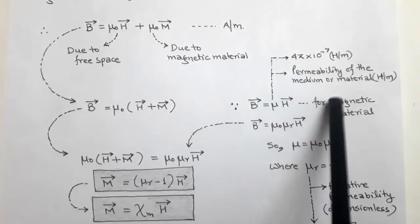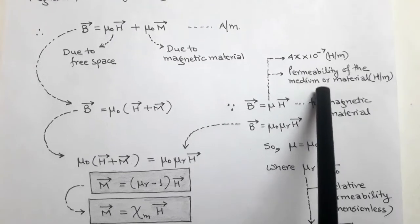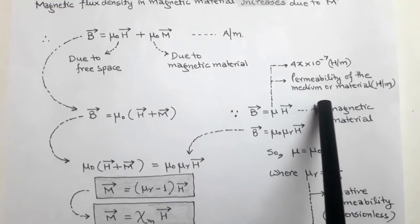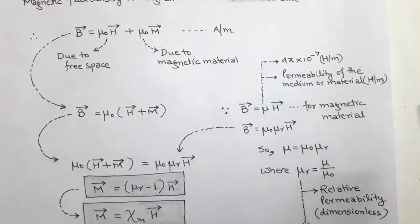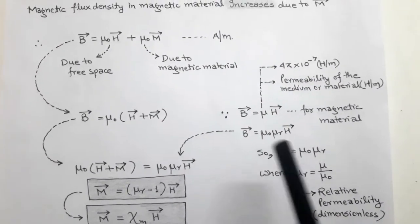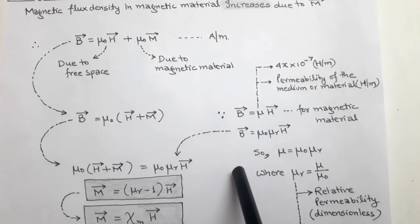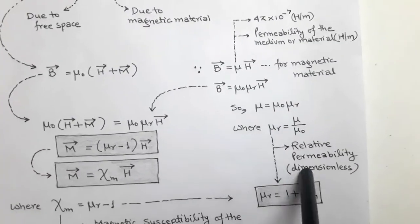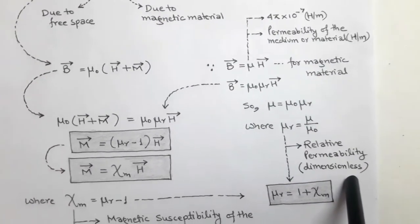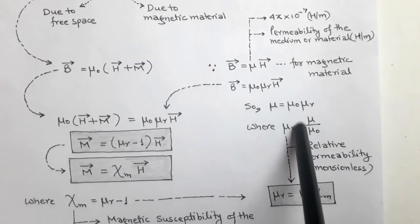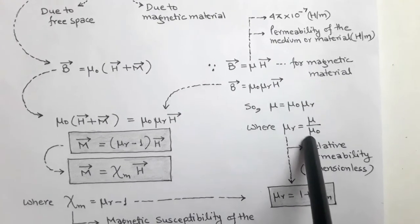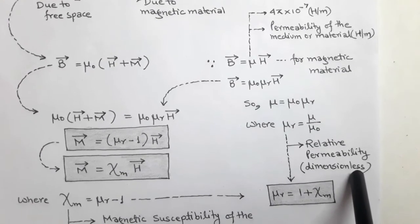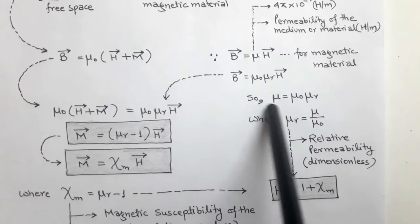Here μ equals μ₀ times μ_r. This μ is called the permeability of the medium or material and its unit is henry per meter, with value 4π × 10⁻⁷ henry per meter. μ equals μ₀ times μ_r, where μ_r is called the relative permeability. It is dimensionless because it is the ratio of μ upon μ₀, so the units cancel.